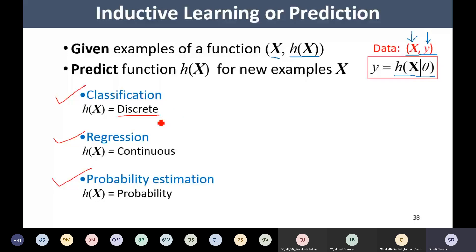In regression, the function h of x provides some continuous real value. For example, we have seen the housing prices example earlier. In that case we were about to get the price of the house, which is not discrete but a continuous value — so that problem comes under regression. Given some input, if the output of the function is a continuous real number, then it would be a regression problem.